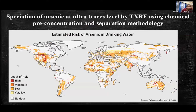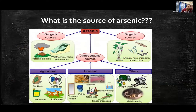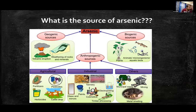I will now discuss speciation of arsenic at ultratrace levels by TXRF using the chemical pre-concentration method. Arsenic contamination in groundwater is a worldwide problem, as seen in the map showing severe arsenic concentrations in different countries. There are basically three types of sources that add arsenic to groundwater. The most important is the geogenic source — there are 200 minerals in the earth's crust that contain arsenic, and during weathering these dissolve and come into contact with groundwater.